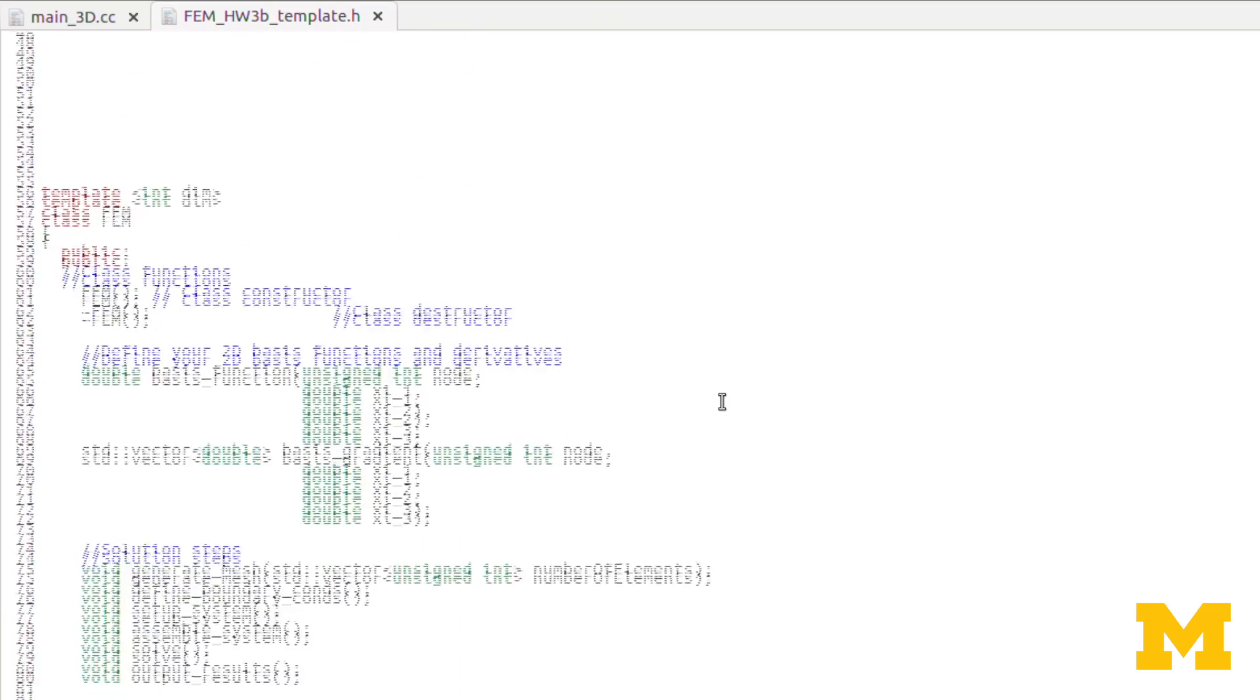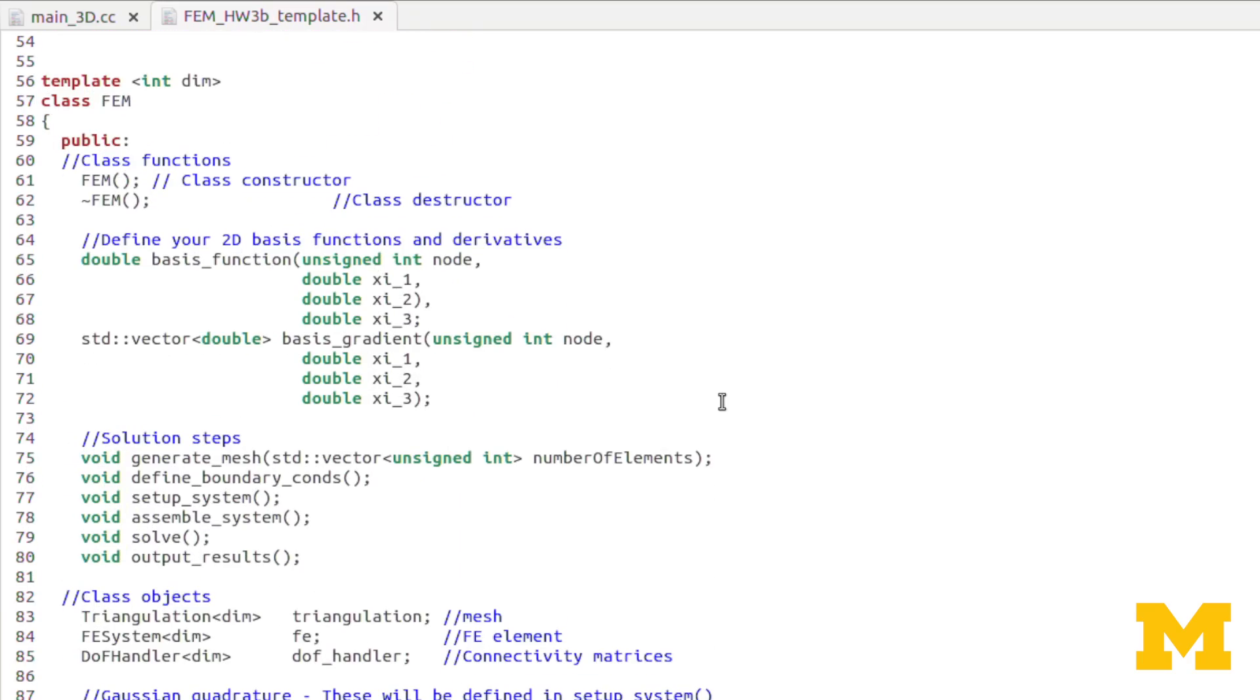No changes in the header file. Here in the declaration of our objects and functions, you can see that for the basis function and basis gradient, we now accept as an input C3, since we have the third dimension now. Same for both. The outputs are still the same, double and vector of doubles.